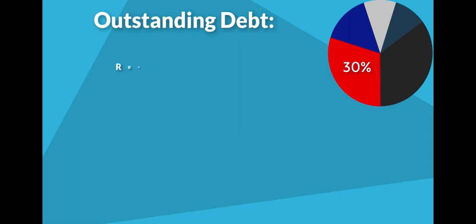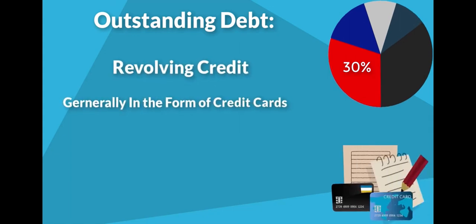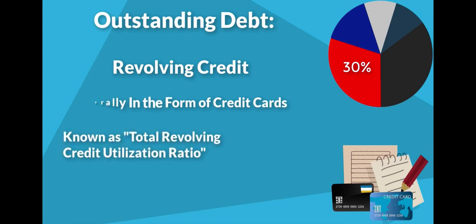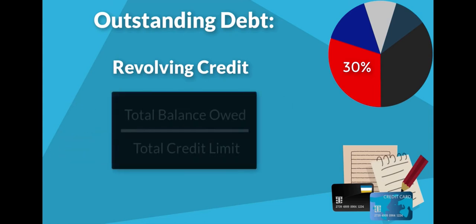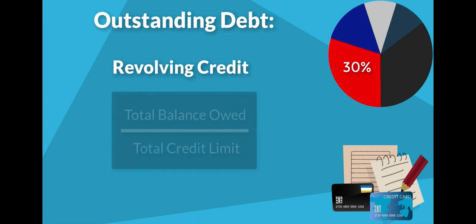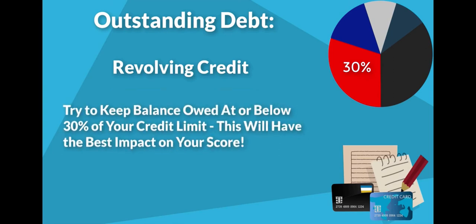The second part of your outstanding debt comes in the form of revolving credit, generally in the form of credit cards. This is known as the total revolving credit utilization ratio and is calculated by dividing the total balance owed on all open credit cards by the total credit limits for all open cards. Keeping the balance owed at or below 30% of your credit limit will have the best impact on your score.